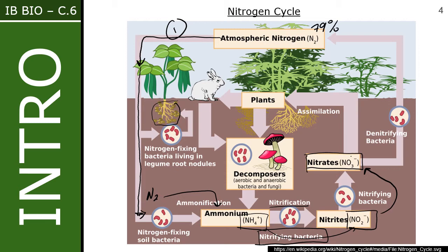Nitrates get assimilated into plants, which use them as part of their functions. When plants die or are eaten by animals, the nitrogen passes up the food chain. Once organisms die, decomposing organisms in the soil break them down, releasing nitrogen in the form of ammonia, which re-enters the cycle. Not all nitrates can be used by plants or animals — denitrifying bacteria remove the oxygen so nitrogen is released back into the atmosphere as N₂.